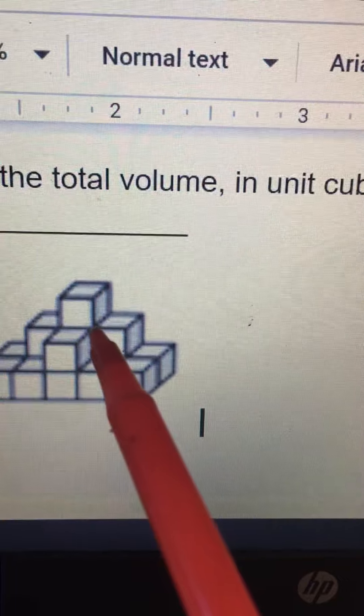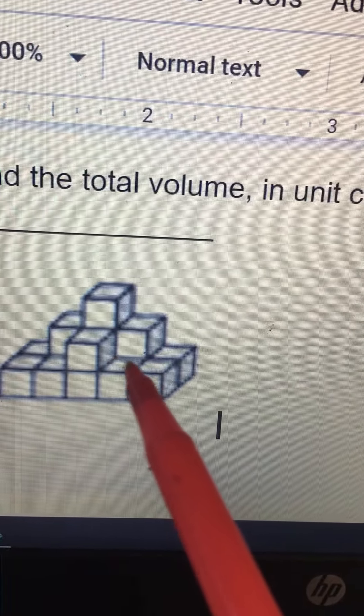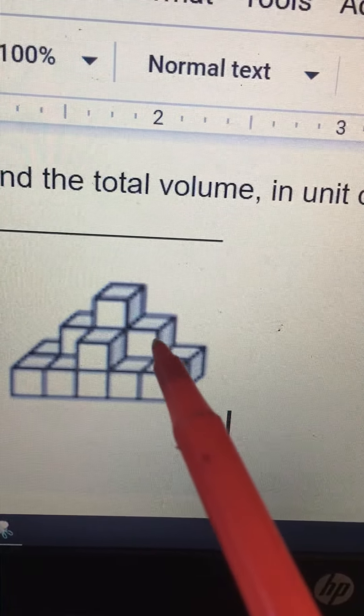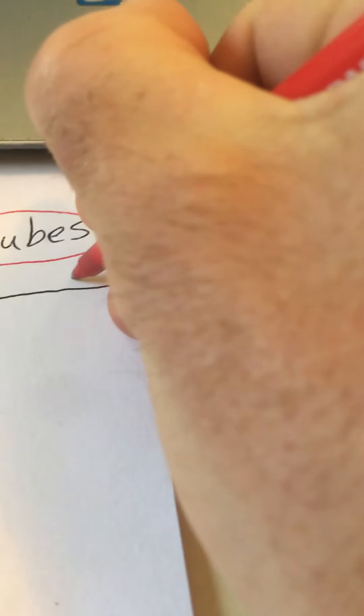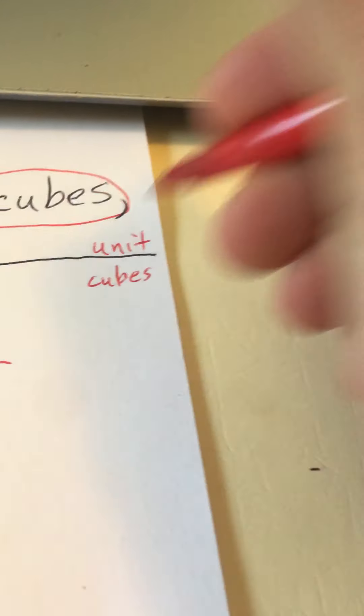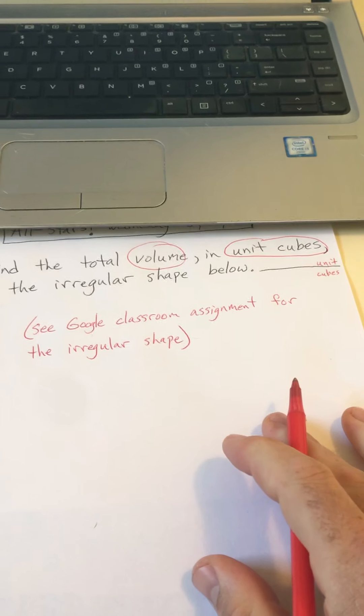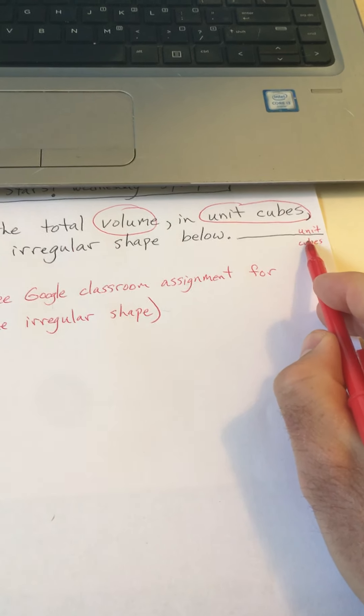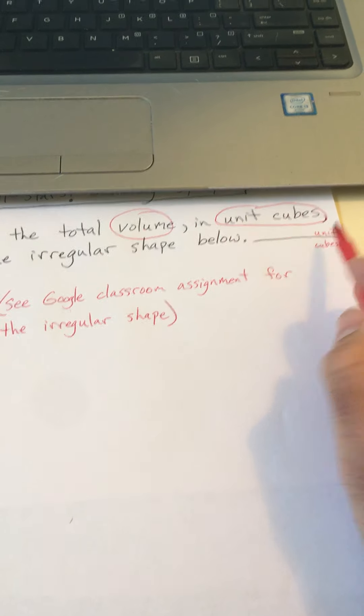Okay, so our answer—if you notice that there's no unit, it doesn't say centimeters or millimeters or inches or anything like that, so we're just going to use the unit of unit cubes. So I'm just going to write that now. How many unit cubes are there? Okay, so the total volume of unit cubes of this irregular shape. And I put the unit already here, unit cubes.